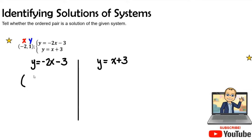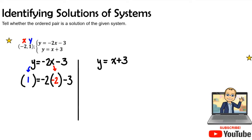For the first equation, I see y, so I'll substitute 1. Then negative 2 times x — x is negative 2 — so I plug in negative 2 there, and then write the remainder of the problem. Now let's simplify: 1 equals negative 2 times negative 2, which gives me positive 4, and then minus 3.